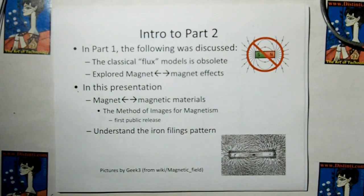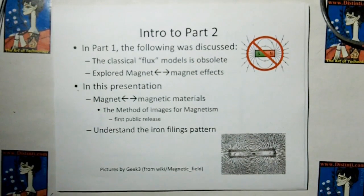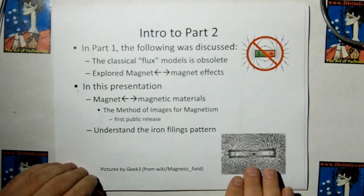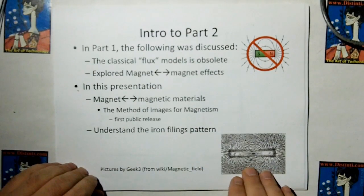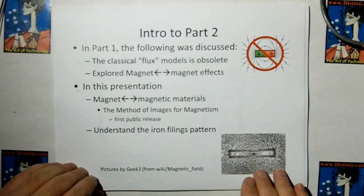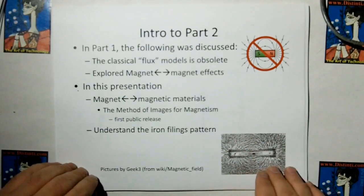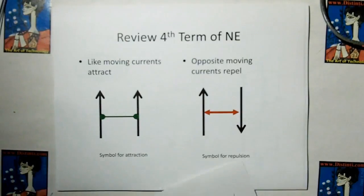Part 1, the following was discussed: the classical flux model is obsolete. We explored magnet to magnet effects. In this presentation, I show you how magnets interact with magnetic materials that are not previously magnetized. That technique is called the method of images for magnetism. This is the first public release. And in the end, we're going to show you how the iron filing pattern is created. I'll show you it's not created because of flux lines, it's created because forces are in balance.